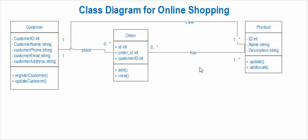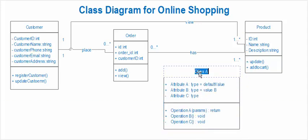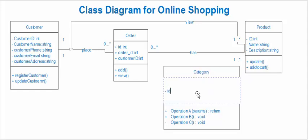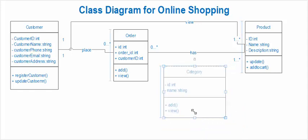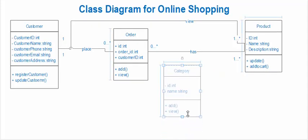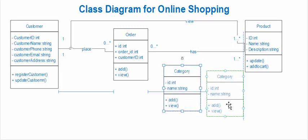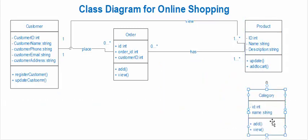Let's add another class: category, for organizing products. We add attributes including a name (string). Functions include add and view.